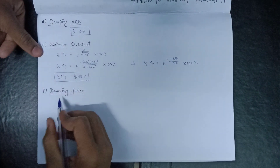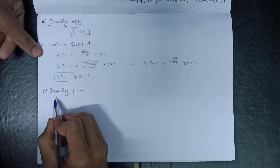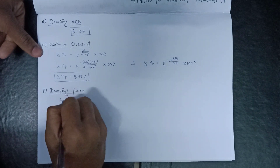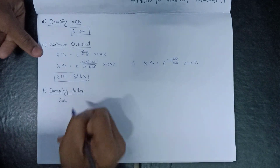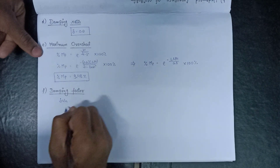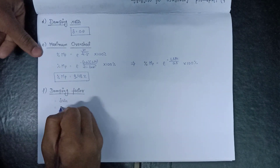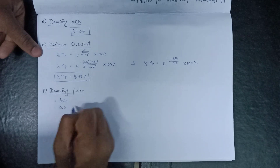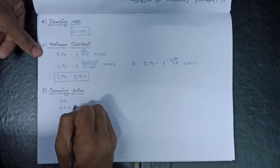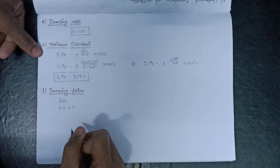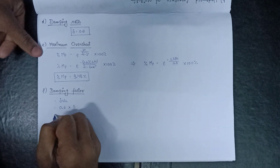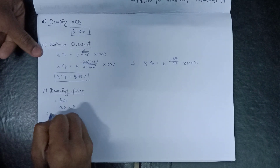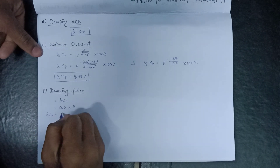Moving on to the damping factor. The damping factor is equal to δ × ωn. Since δ = 0.6 and ωn = 5, the damping factor δωn = 0.6 × 5 = 3.